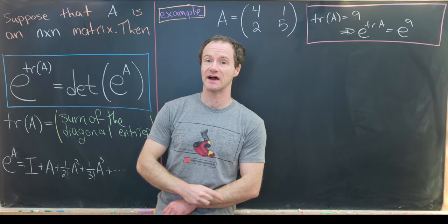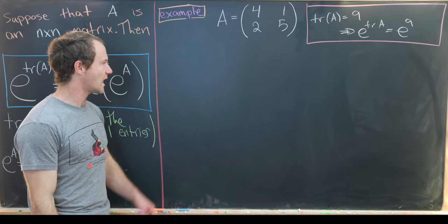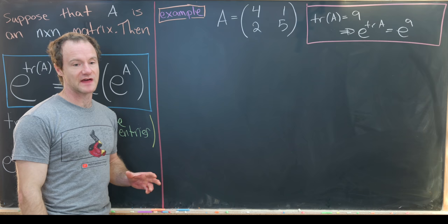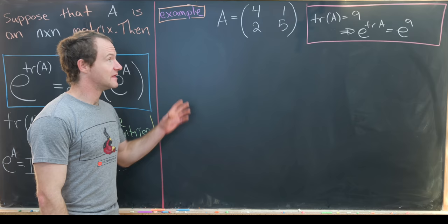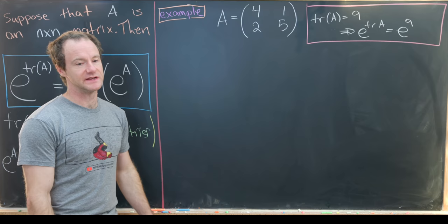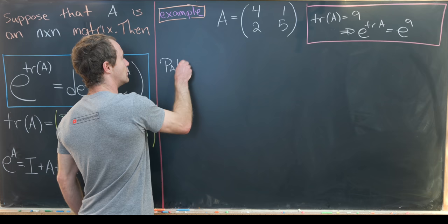Now let's calculate the right-hand side, which is quite a bit more involved, although if you've taken linear algebra it shouldn't be that bad. We'll start by finding the eigenvectors and eigenvalues for A, because we want to diagonalize A — that will make finding the matrix exponential much easier. To find eigenvectors and eigenvalues we start with the characteristic polynomial.